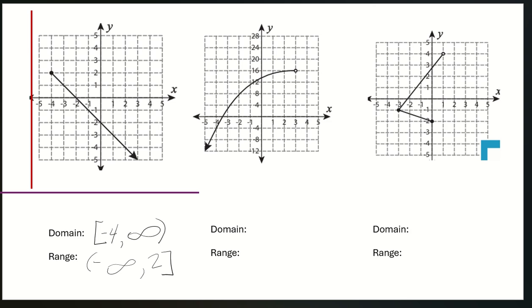So if it's a closed circle, you want to use brackets for closed circles. Brackets are going to be closed circles. Parentheses are going to be open circles because it doesn't include that specific point, but it includes all the other points around it, but not that point. So again, bracket is closed circle, parentheses is open circle.